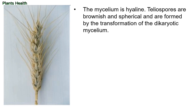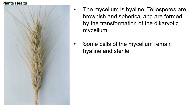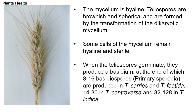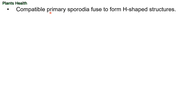In the disease cycle, the mycelium is hyaline. Teliospores are brownish and spherical, formed by transformation of the dikaryotic mycelium. Some cells of the mycelium remain hyaline and sterile. When teliospores germinate, they produce a basidium, at the end of which 8 to 16 basidiospores — also known as primary sporidia — are produced in Tilletia caries and T. foetida; 14 to 30 in T. controversa; and 32 to 128 in T. indica. We can differentiate these pathogens based on the number of basidiospores as well.